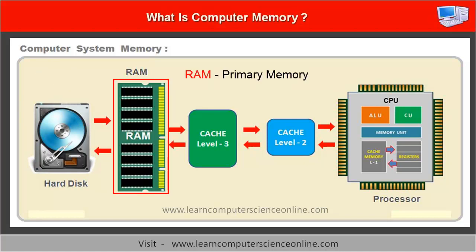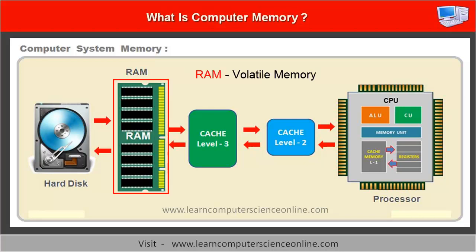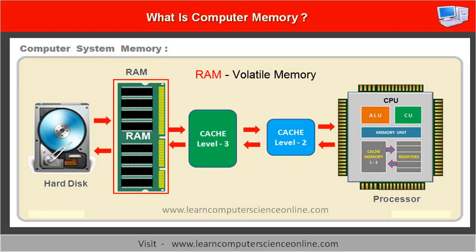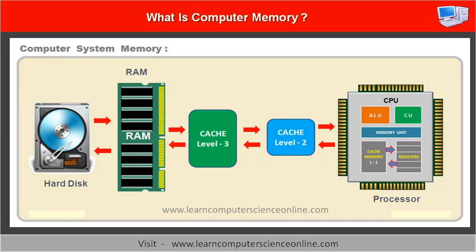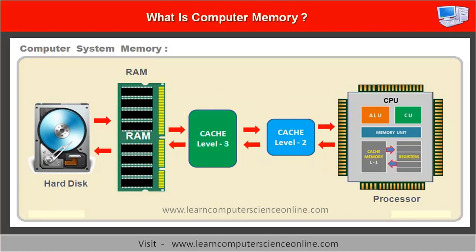This main memory RAM is also referred to as primary memory or temporary memory, because it does not retain the data when the computer system is powered off. The computer system memory hierarchy also includes some high speed memory, such as cache memory.